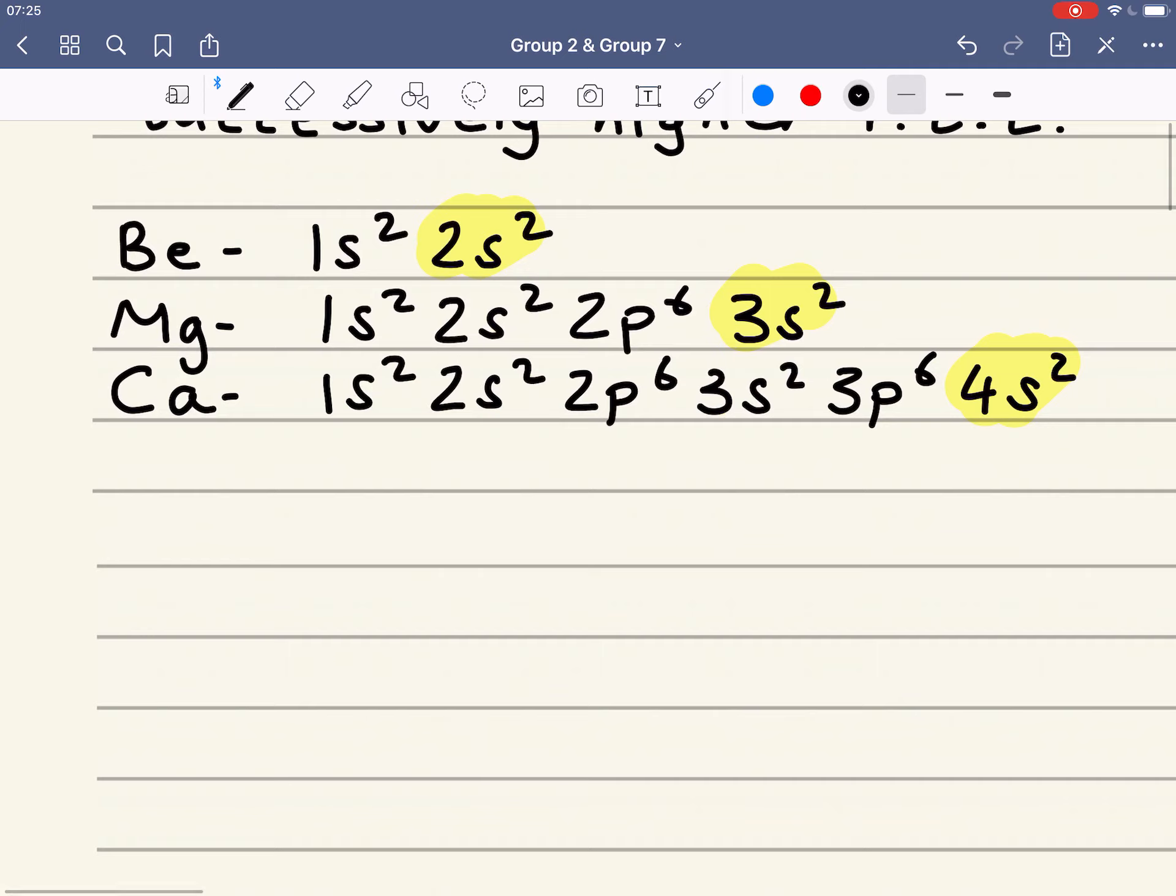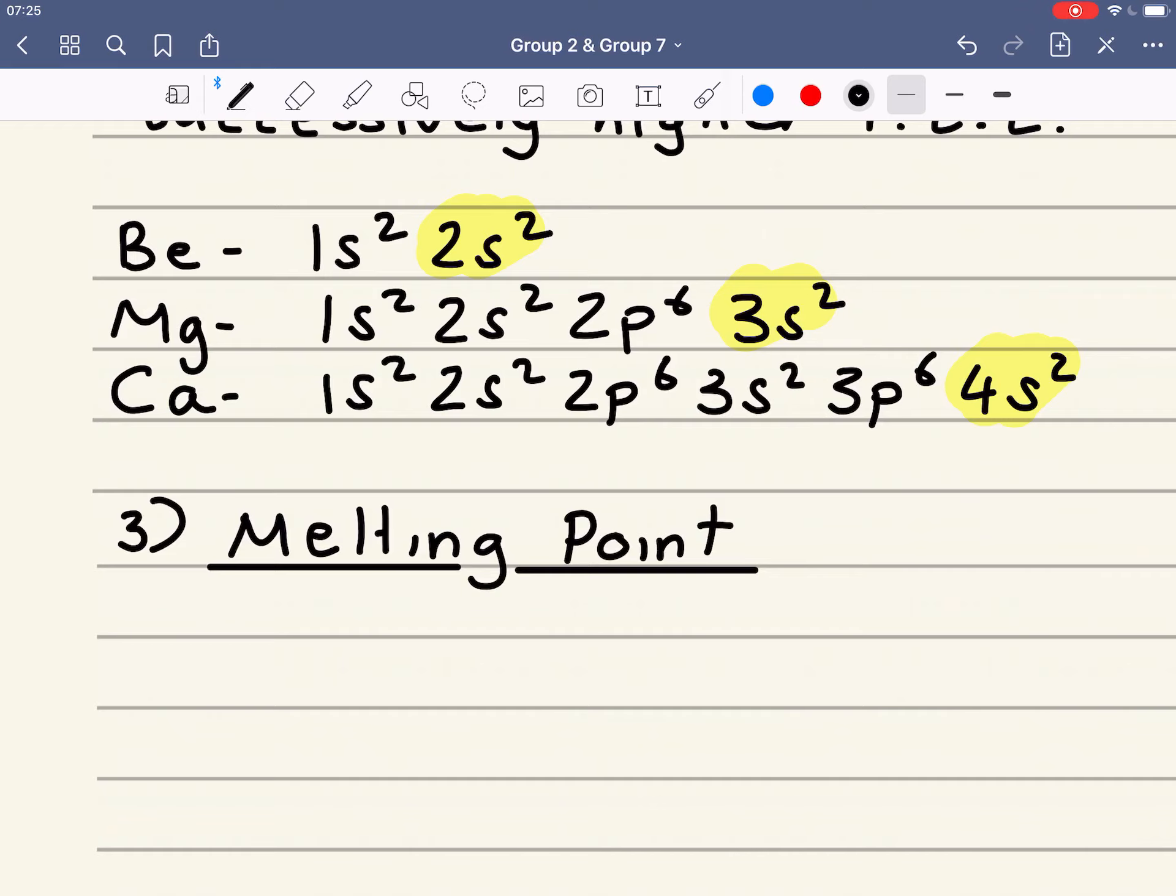The next physical property we're going to have a look at is melting point. Now, what determines the melting point of any substance is its structure. And, remember, there are four different types of structures. Giant ionic, giant metallic, macromolecular, and simple molecular. And, all these elements being in group 2 are all metals. They all exist as giant metallic structures.